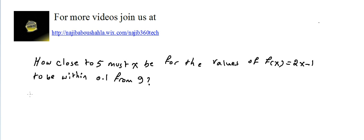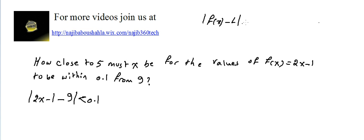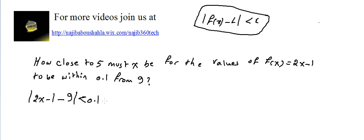You can check video number 3 or 4 to see how I explain the formal definition of the limit. We write: absolute value of f(x) minus L, which is |2x - 1 - 9|, is less than 0.1. This is how we should start, and you can go back to the preceding videos for the full explanation.